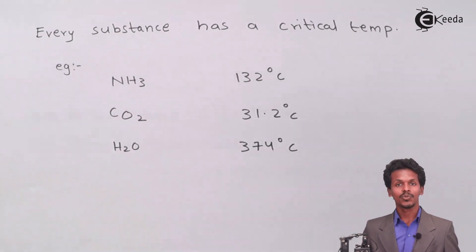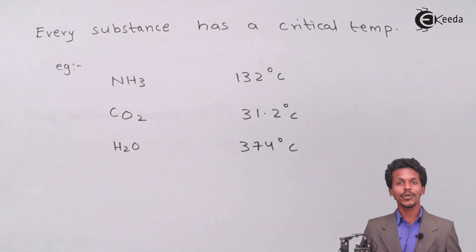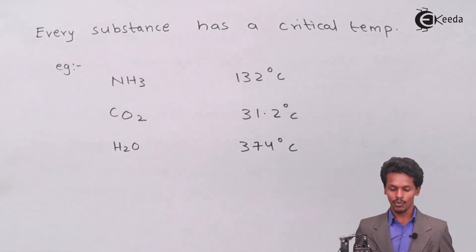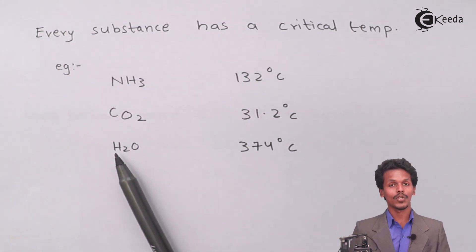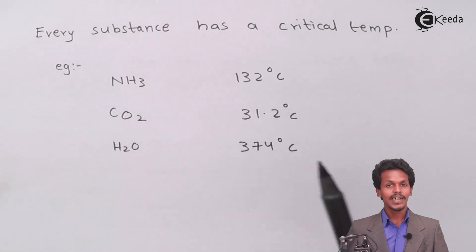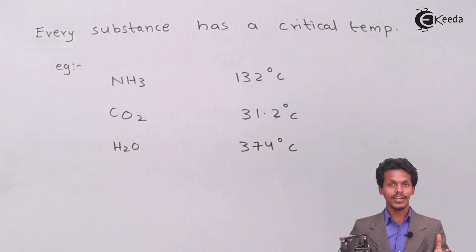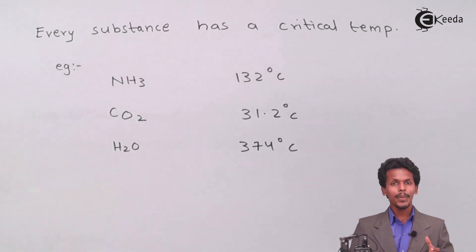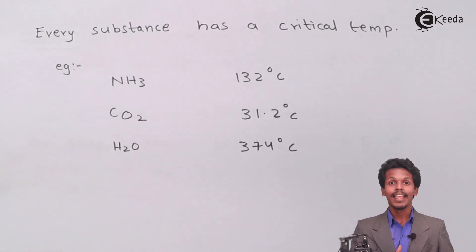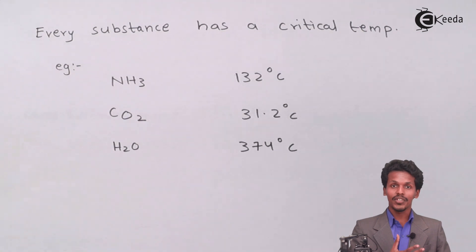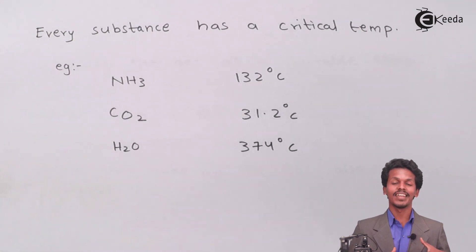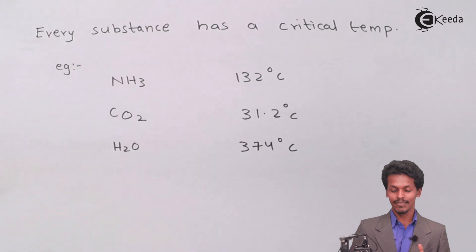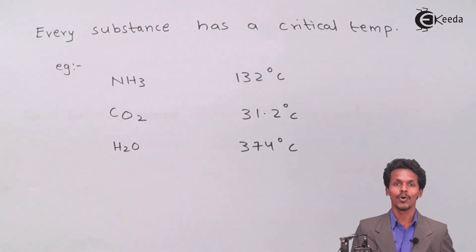Similarly, for carbon dioxide the critical temperature is 31.2 degrees Celsius — below that, the gas can be converted to liquid, but above it, it won't happen. For H₂O, the critical temperature is 374 degrees Celsius, above which even applying more pressure will keep the water in the gaseous state.